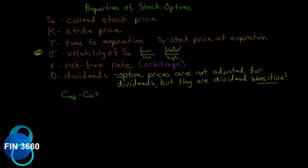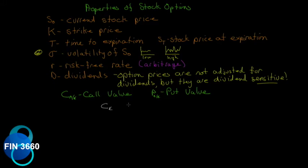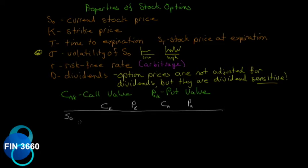A capital C with either A or E will represent the call value for American or European options, and a capital P with A or E will represent the put value. What we want to do now is see what happens to call and put values as we change only one variable and leave the others the same. We'll change the current stock price, then the strike price, then time, volatility, the risk-free rate, and dividends.